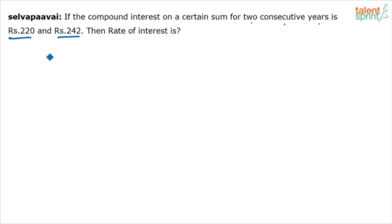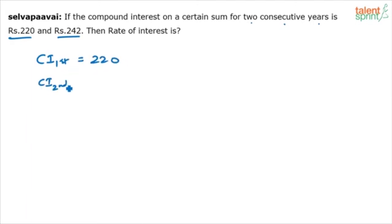I'll explain how people have arrived at 10%. Let's say CI for the first year is equal to 220, and CI for the second year is equal to 242. The question is: have you taken it as first year and second year, or just two consecutive years and then followed the same process? Are you sure the answer would be 10%?